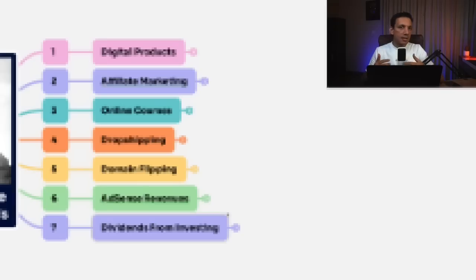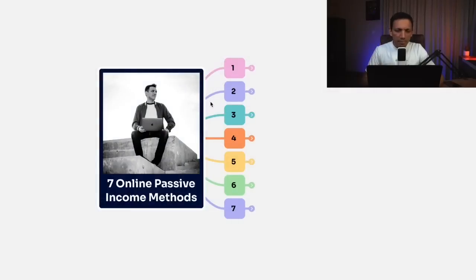My name is Zathar Ashik and I'm going to be sharing with you seven different ways on how you can create a passive income online. This is after trying and testing different kinds of methods myself personally, and after building a multi-crore business in the online space. So let's get into the mind map, and I'm going to start with the first method.